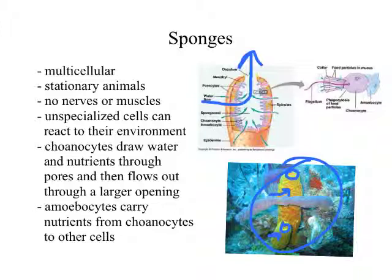Amoebocytes are the second kind of cell found in sponges. They carry the nutrients from the choanocytes, digest those nutrients, and spread them to different cells throughout the sponge. For digestive purposes, you can think of amoebocytes as the digestive cells of a sponge — they move around inside the sponge delivering nutrients to all the different kinds of cells. That's basically what sponges are: the very simplest kind of animal invertebrates.